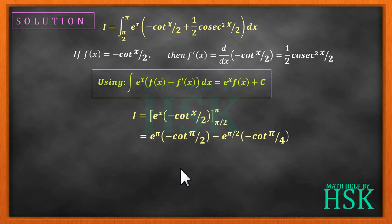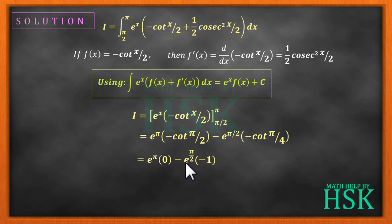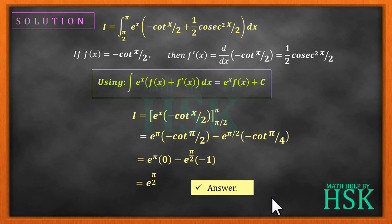Applying the limits: e to the power of pi times minus cot(pi/2) minus e to the power of pi/2 times minus cot(pi/4). Now cot(pi/2) equals cot 90° which is zero, so that whole term becomes zero. And cot(pi/4) equals cot 45° which is 1, so minus minus becomes plus, giving the final answer as e to the power of pi by 2.